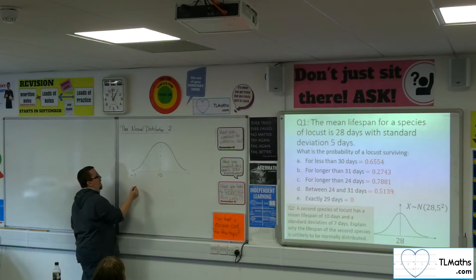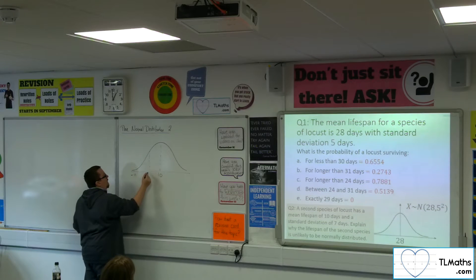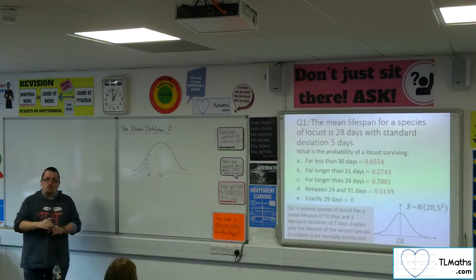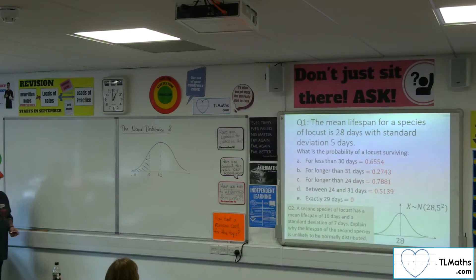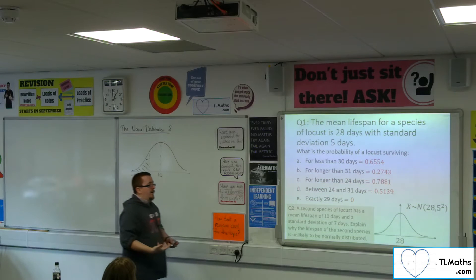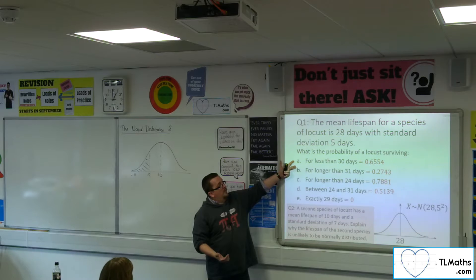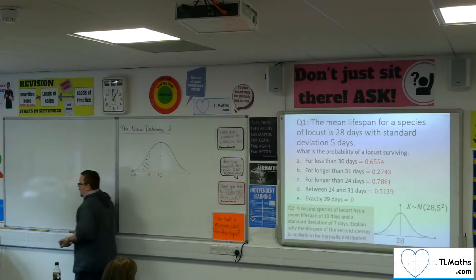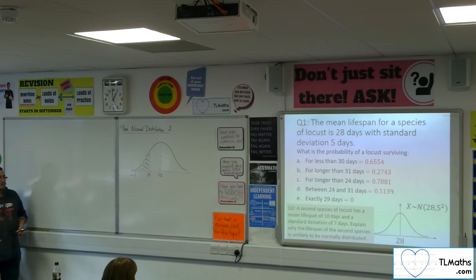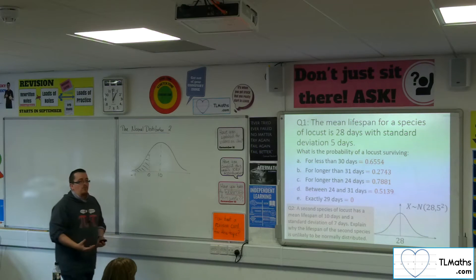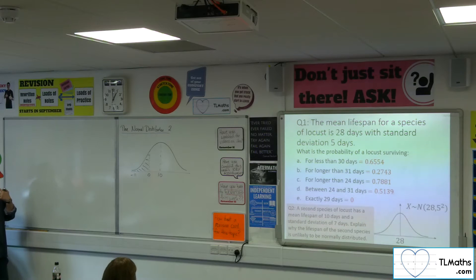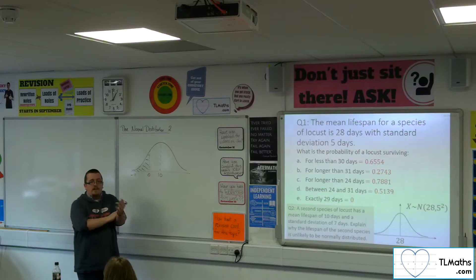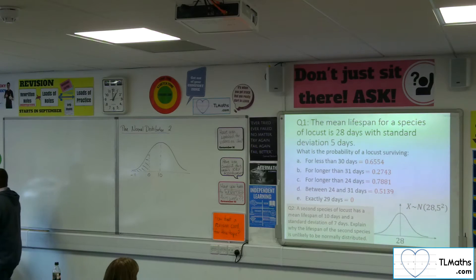Three standard deviations down puts you at minus 11, so a considerable portion of your normal distribution curve would have negative values, which doesn't make sense. The standard deviation is too large. It's these kind of considerations — reminding yourself that the majority of the data, 99.7%, is within three standard deviations of the mean — that matter. And that has a knock-on effect.